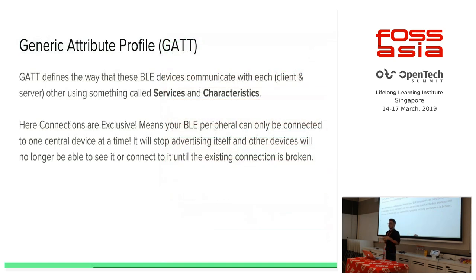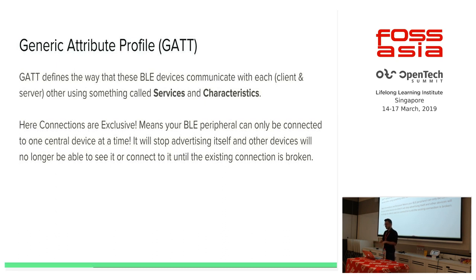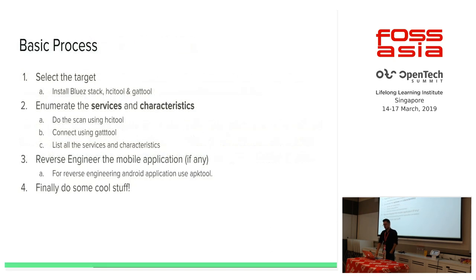GATT defines the way BLE devices communicate with each other using something called services and characteristics — remember these terms, I'll use them often. It makes use of a protocol called ATT, which is used to expose services and characteristics. The most important thing to keep in mind is that GATT connections are exclusive: a BLE peripheral can only be connected to one device at a time. As soon as the peripheral connects to a central device, it stops advertising itself and other devices can no longer connect to it until that connection is broken.